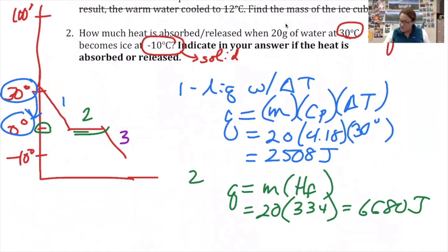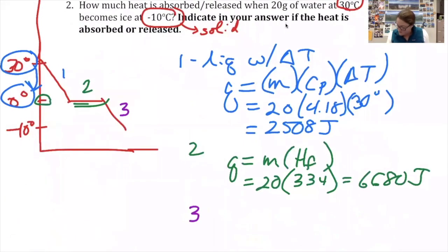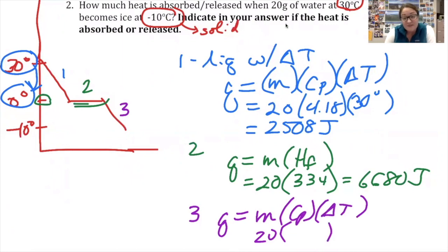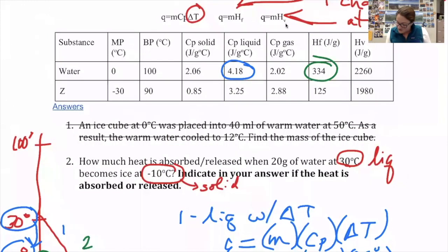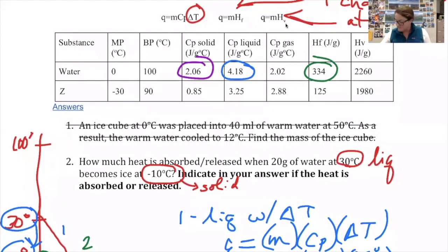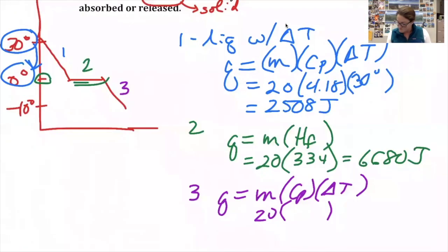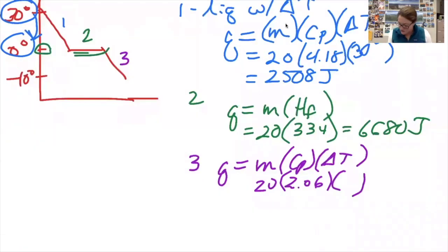Third, I'm changing temperature again, so I'm going to use q equals mass times specific heat times change in temperature. The mass is still 20 grams, but now that we're below zero, the specific heat is different. For water that's in the solid phase, the specific heat is 2.06. And the change in temperature—I'm going from zero to negative 10—is a change of 10 degrees. That's 412 joules.